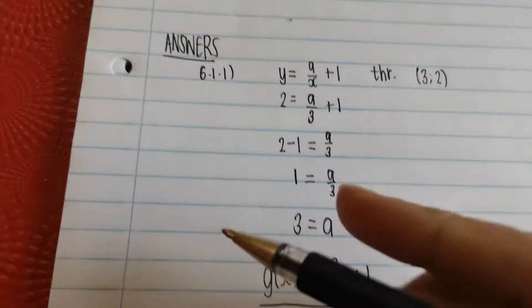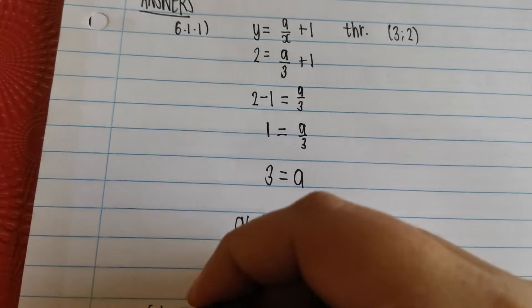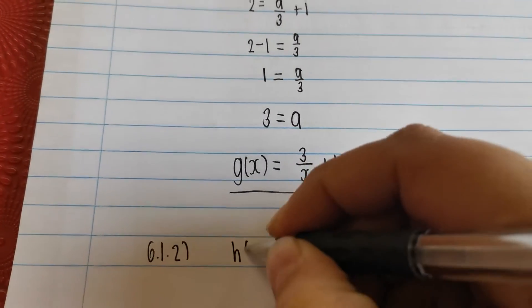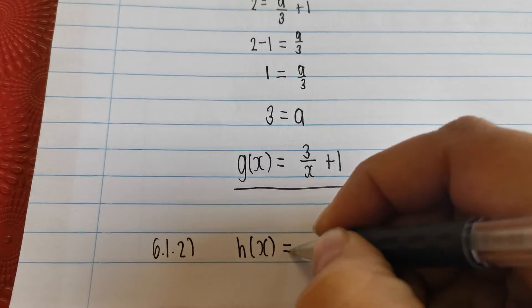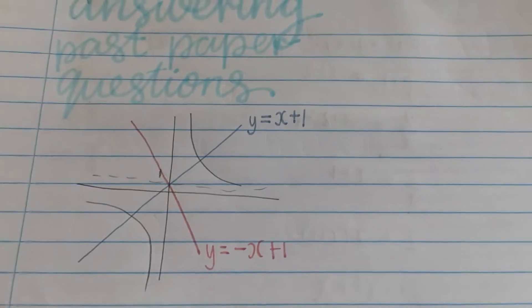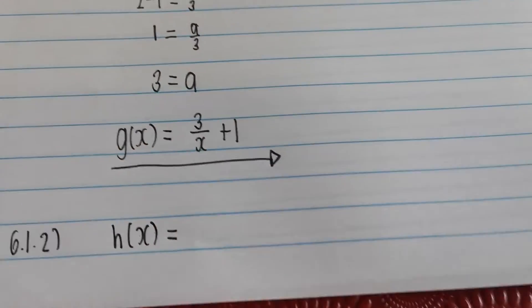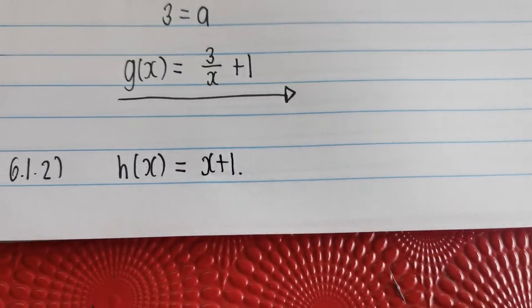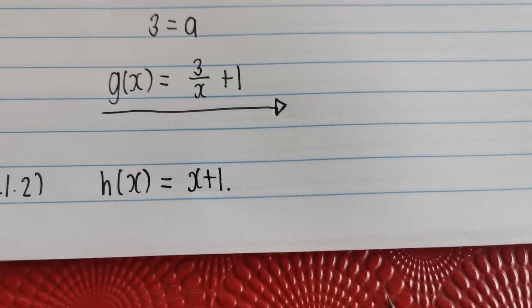So 6.1.2. And they want us to name it h(x), right? h(x) is equal to x plus 1. And we're done. That is it. Second question. 6.2.